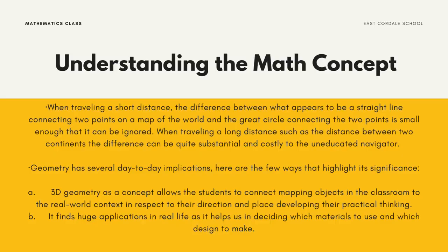When traveling a short distance, the difference between what appears to be a straight line connecting two points on a map of the world and the great circle connecting the two points is small enough that it can be ignored. When traveling a longer distance, such as between two continents, the difference can be quite substantial and costly to an educated navigator.